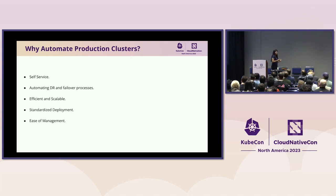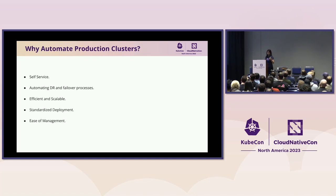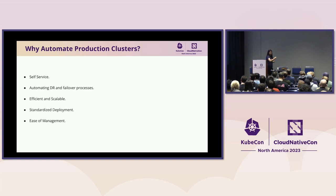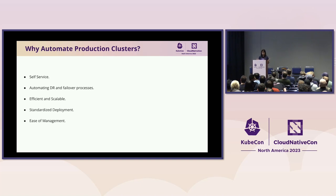I won't dig deeper into why we need automation because we all know: it helps with DR, it helps fail-over processes. It's efficient, scalable, you can do it again and again. It's auditable, helps reduce misconfigurations, ease of management — all that good stuff.